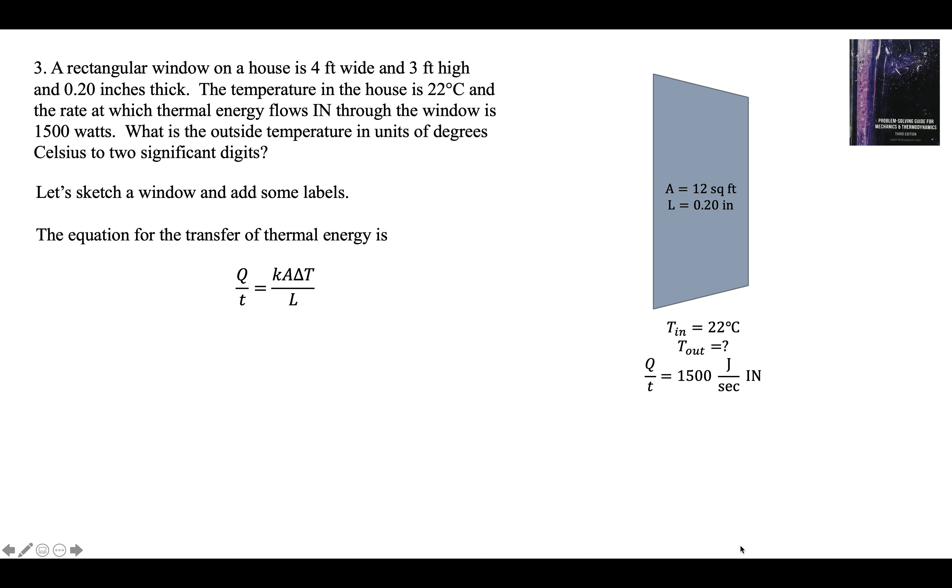So we have Q over T is K-A delta T over the thickness of the window. The thermal conductivity of the glass is 0.8 watts per meter per Kelvin. We have some mixed units we have to take care of. Let's get everything in meters.